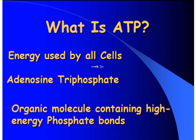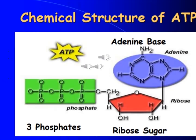What is ATP? ATP is the energy currency used by all cells and stands for Adenosine Triphosphate. It is an organic molecule containing high-energy phosphate bonds. Now I am going to show you the picture or the structure of ATP. Here is the chemical structure of ATP — it consists of three basic parts, which you can see highlighted in the diagram.